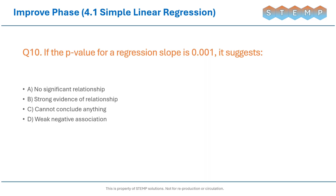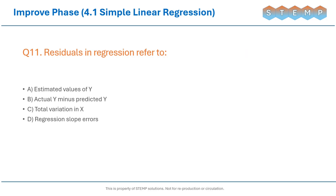If the p-value for a regression slope is 0.001, it suggests...